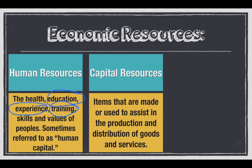Capital resources, I would argue, are the most common type of resources we have. As I'm recording this on a computer, I'm using a capital resource to deliver education to you today. As I look on my desk, I've got a calendar made of paper — paper is a natural resource, but the calendar itself helps me stay focused. So capital resources include railroads, boats, canals — you name it, it's all there.